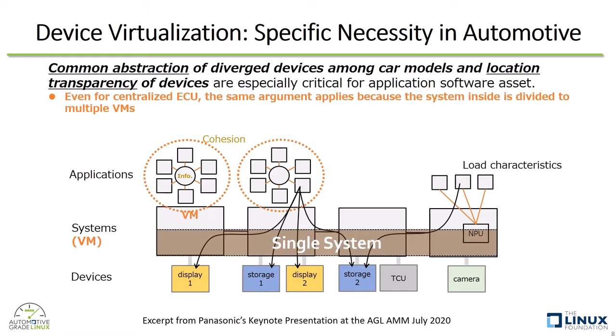Someone might think the necessity could be mitigated when a centralized architecture is deployed. However, the same necessity is still there because a single centralized system still consists of multiple virtual machines, and as shown in this figure, the logical architecture stays similar.